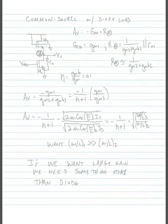Let's look at a quick example of a common source circuit with a diode load. So here we have our NMOS transistor that's connected to the supply rail.